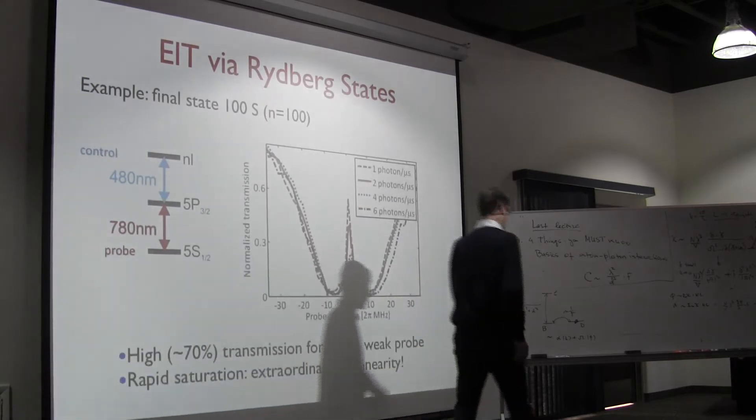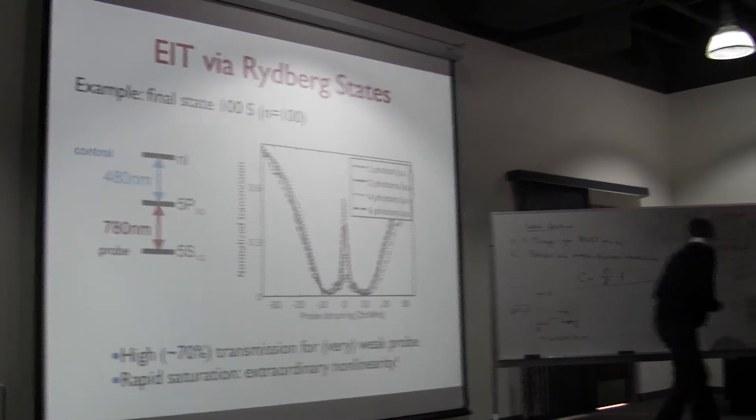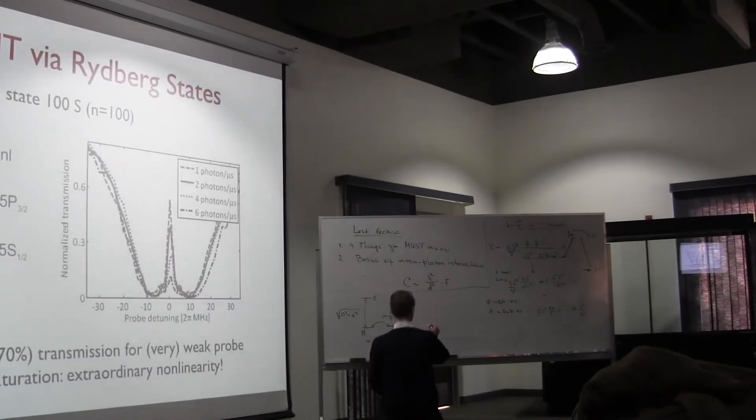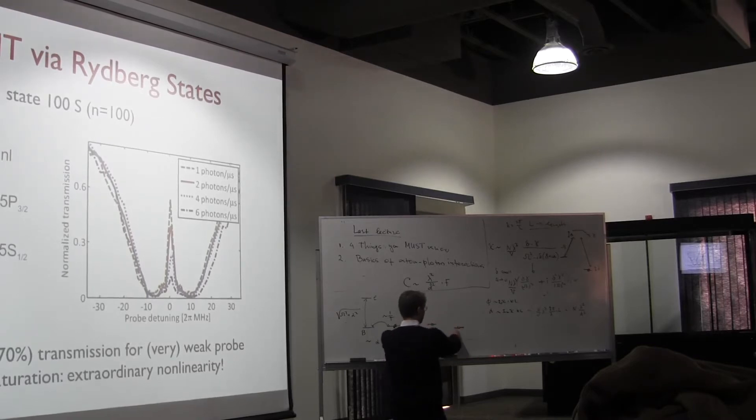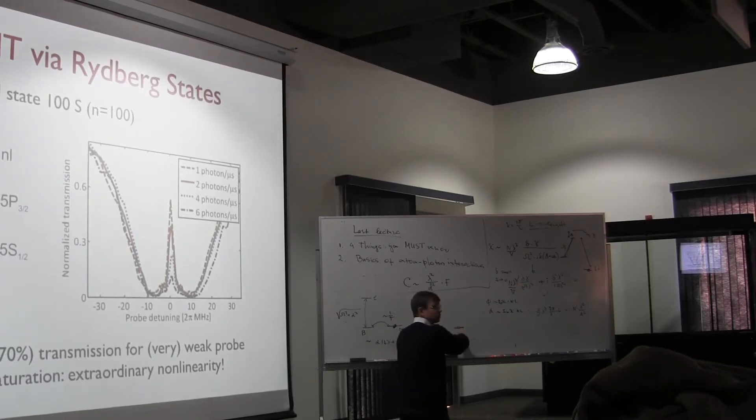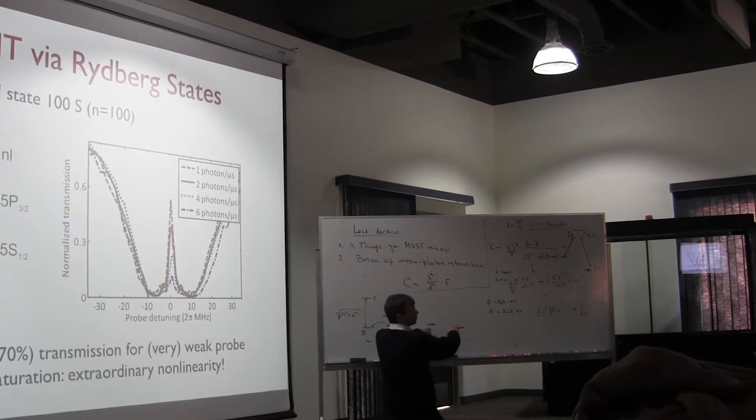So basically what I mean by interference is simple. So suppose you prepare the atom in the dark, in a dark state, which is a superposition, a properly phased superposition of two distinct states. Do you see what I'm talking about?